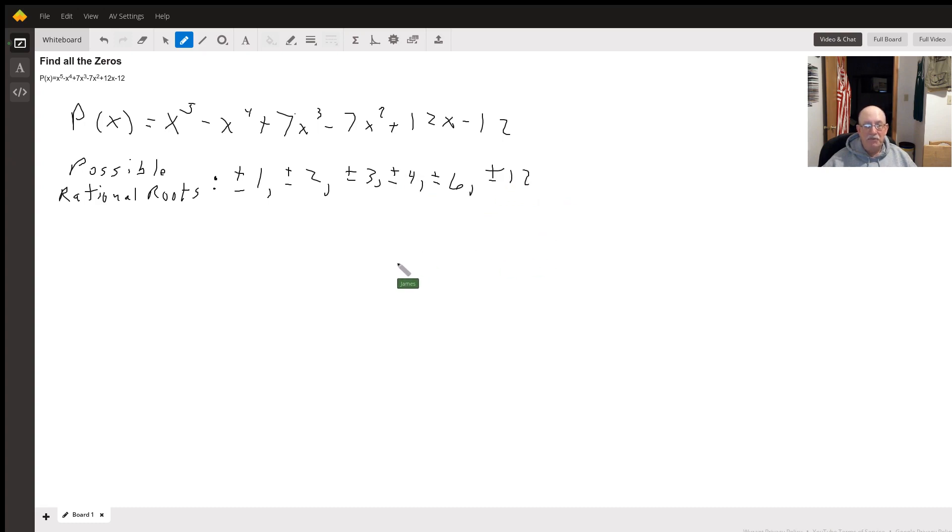So now we set up our synthetic division with the coefficients up there. It's going to be 1, negative 1, 7, negative 7, 12, and negative 12.